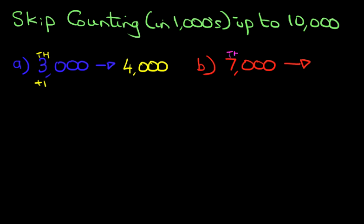First, find the thousands column. It's a 7 plus 1. That becomes 8,000. And it really is as simple as that.